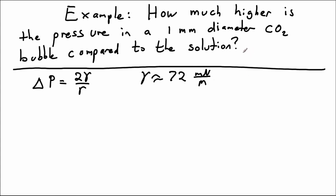The temperature is not given, so we're going to assume room temperature. Otherwise, we'd have to look up the surface tension at a particular temperature. We have the radius. Actually, we're given the diameter, so the radius is going to be 0.5 millimeters. And we're going to put all these into SI units.